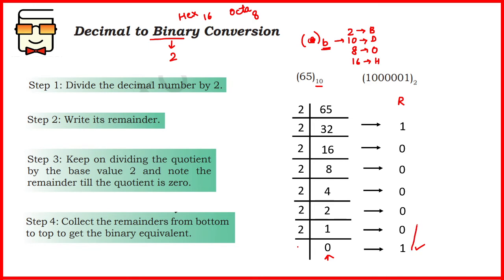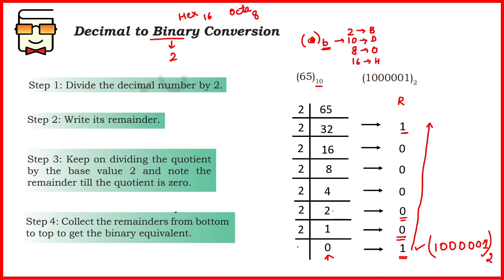Starting from the bottom remainder and going till the top remainder, you have to write the answer in this form. You will first write the last remainder, then the second last remainder, then the third last remainder and so on. As you will see, you will get the answer: 1, 0, 0, 0, 0, 0, 1. Since this value contains only 0s and 1s, it is in binary form because binary only has two symbols — 0 and 1. This is the binary form of 65.